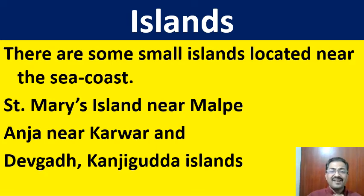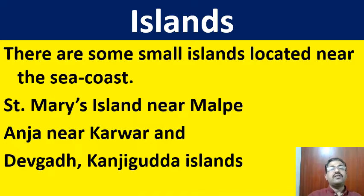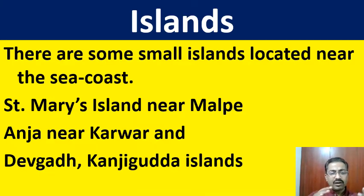There are certain islands as well. There are some small islands located almost nearer to the seacoast within 5 to 15 kilometers. For example, St. Mary's Island, which is also called Coconut Island, near Malpe; Anja Island near Karwar; and Devagat and Kanji Gunda Islands. All these are the islands nearer to the coastal line of Karnataka.